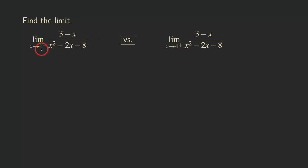But if you plug 4 into the x in the denominator, if you do that, you're going to get 16 minus 2 times 4, that's minus 8, minus 8 — you are actually having the denominator approaching 0 for both problems. I'm putting the two problems side by side, the left-side limit and the right-side limit, because I want to show you the comparison. This is not the same as limits at infinity — these two are actually called infinite limits.